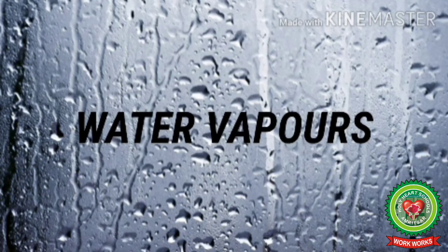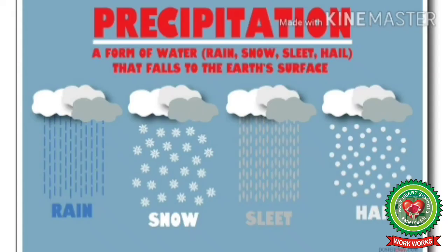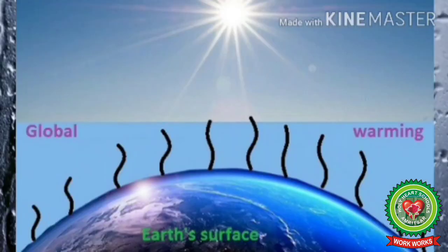Next we have water vapor. Water vapor is the gaseous form of water and plays an important role in the atmosphere. It is the source of condensation, clouds, and all forms of precipitation. It is added to the atmosphere by evaporation of water from oceans, seas, lakes, rivers, etc., and also by transpiration from the leaves of plants. Like carbon dioxide, water vapor is capable of absorbing heat radiated by the earth and keeps the lower layers of the atmosphere warm at night.